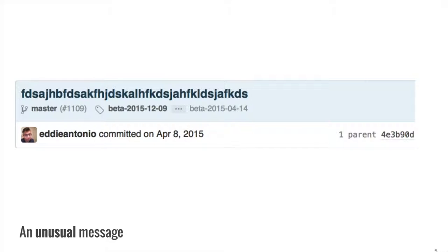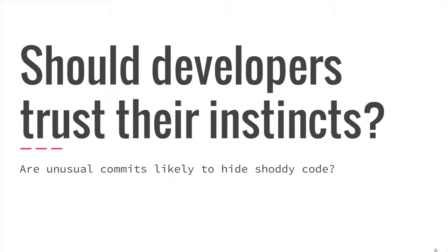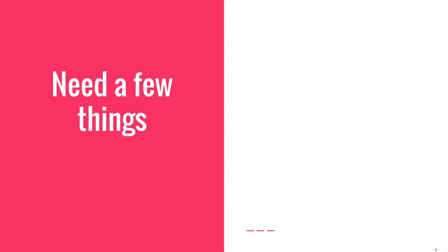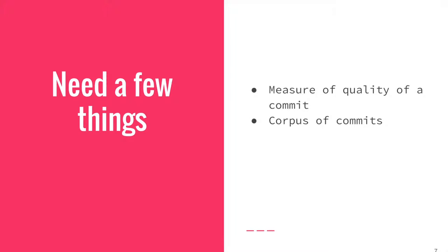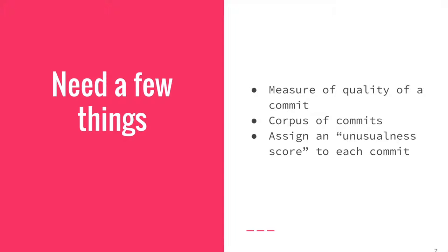So our question is: should developers trust their instincts? Is the commit bad just because its message is bad? To test this, we'll need a few things: a way to determine the quality of the commit, a corpus of real commits, and a way to assign an unusualness rank to each commit message. Then we just check if code quality is correlated with commit message unusualness.